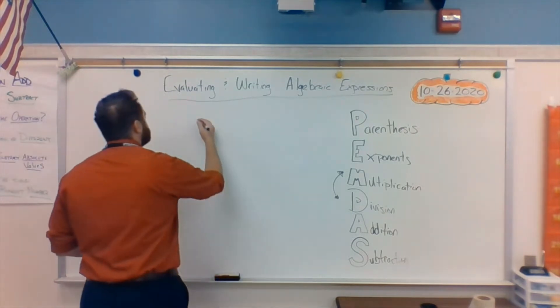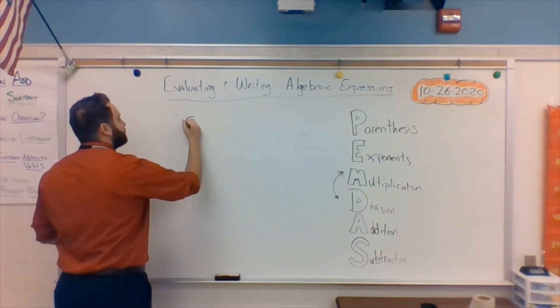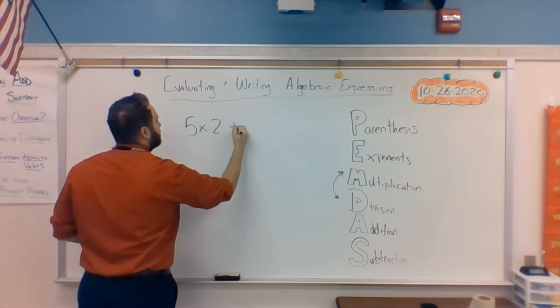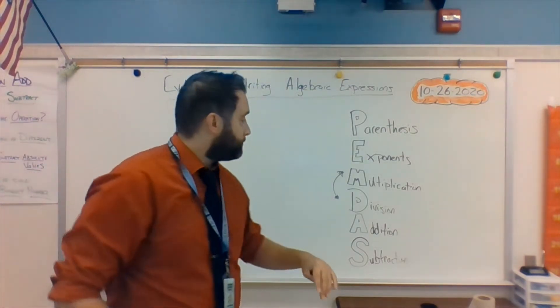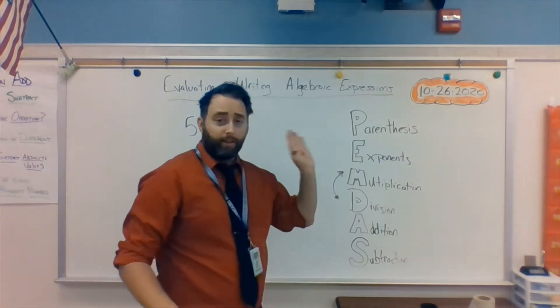So, it's whatever comes first in the algebraic expression. So, if it's 5 times 2 divided by 3, you do the one on the left first. You start left, work right. When it comes to multiplication and division, start left, work right.